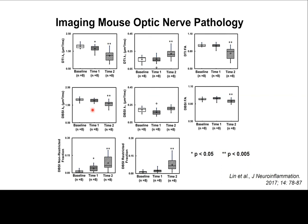But looking at DPSI axial diffusivity, there is no axonal injury at onset, but significant injury two days later. Looking at radial diffusivity for demyelination, there is no demyelination at the third time point, and even at the second time point it is not significant. Looking at the overall fractional anisotropy, it again indicates more significant damage to the axons at the second time point.